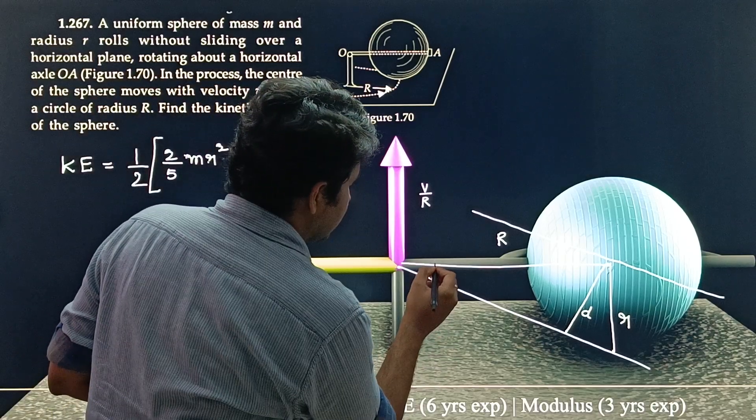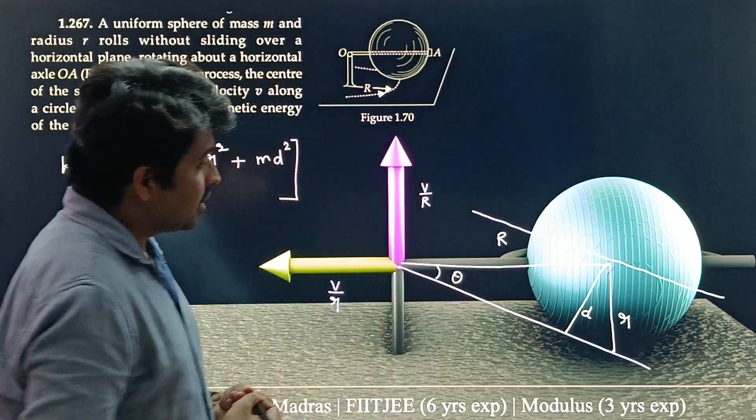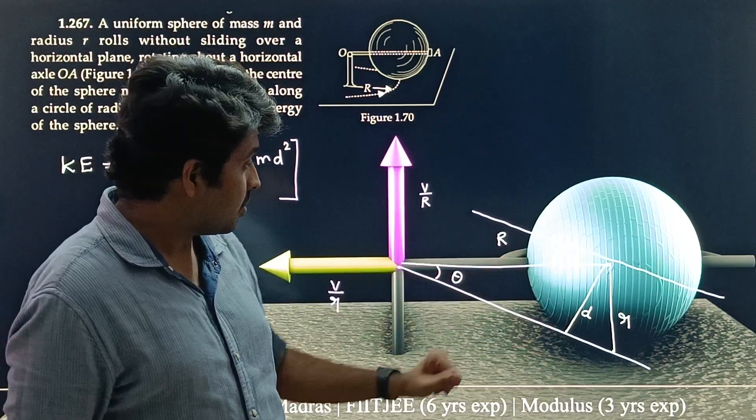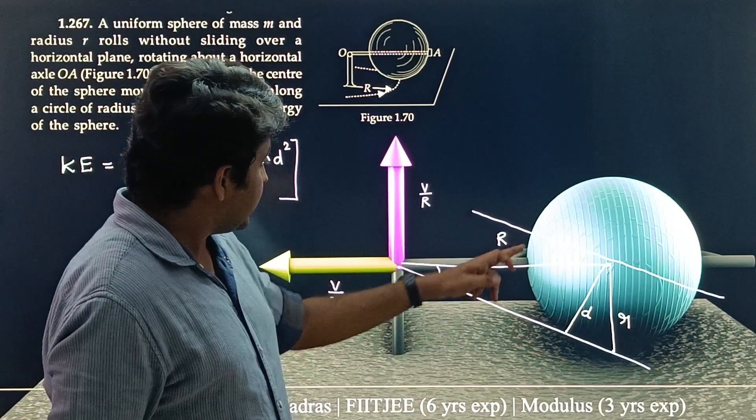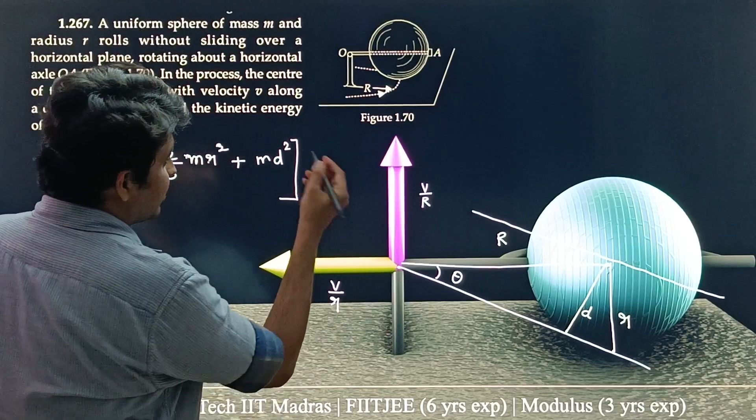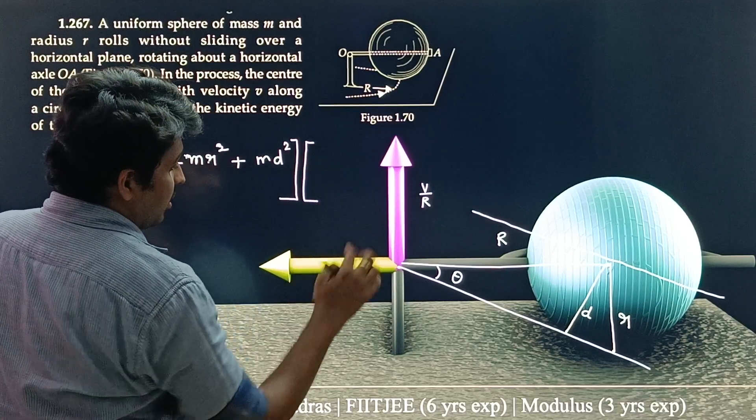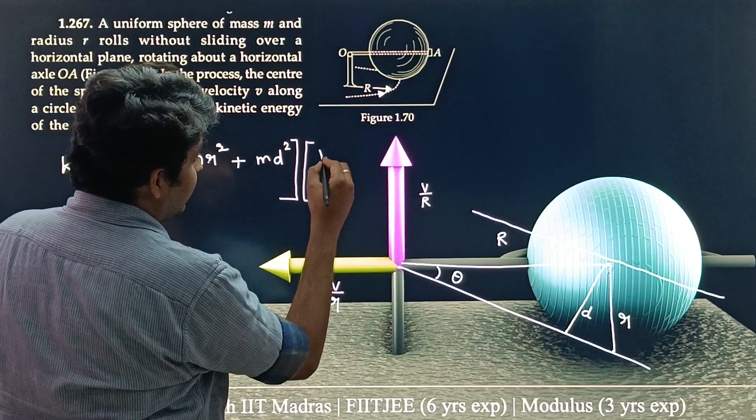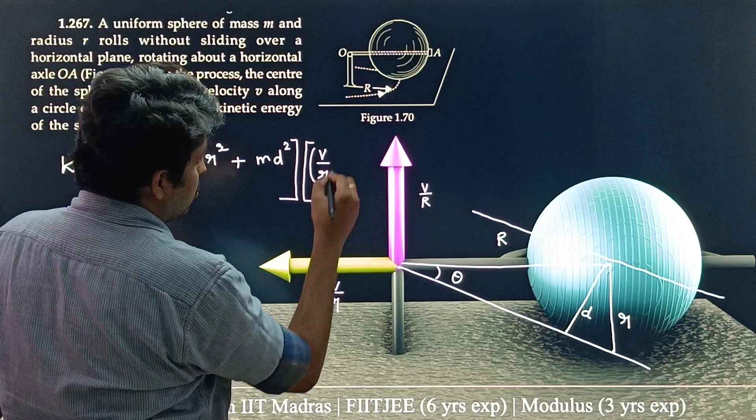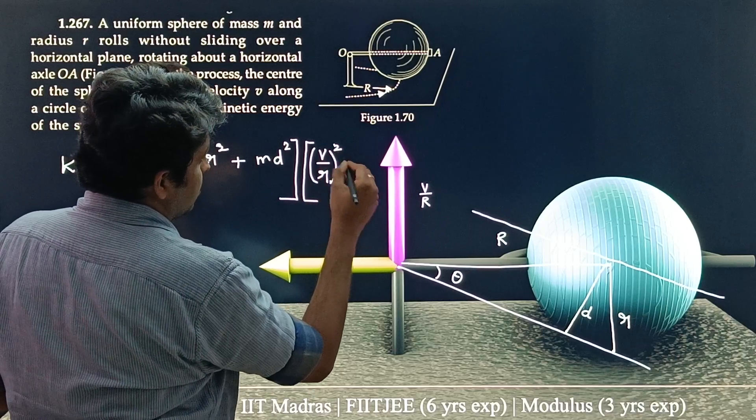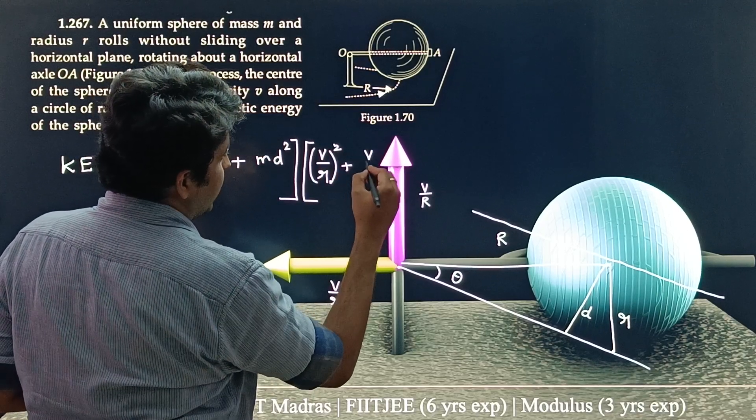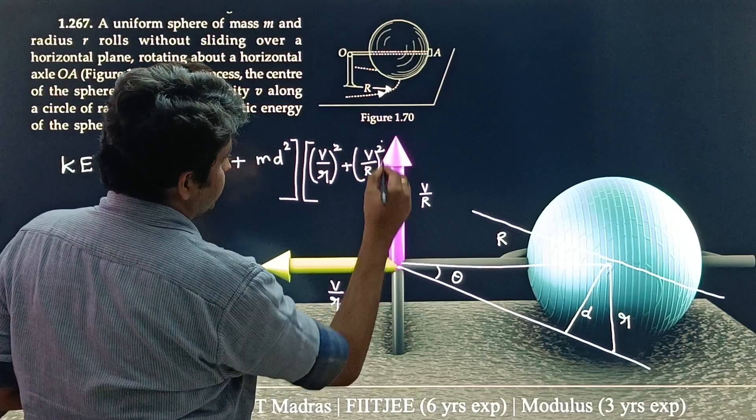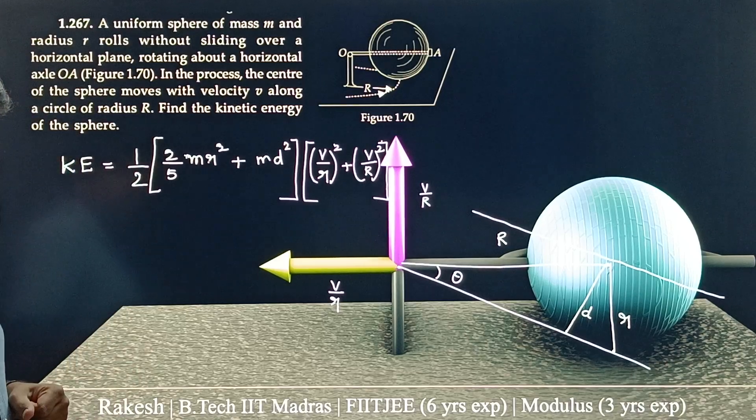You know d we can find it. Let us say this is theta. We can find what is this d. And into omega square. What is omega square? The net omega is V by r i cap plus V by capital R j cap. So this will be V by r whole square plus V by capital R whole square. This will be the net omega square.